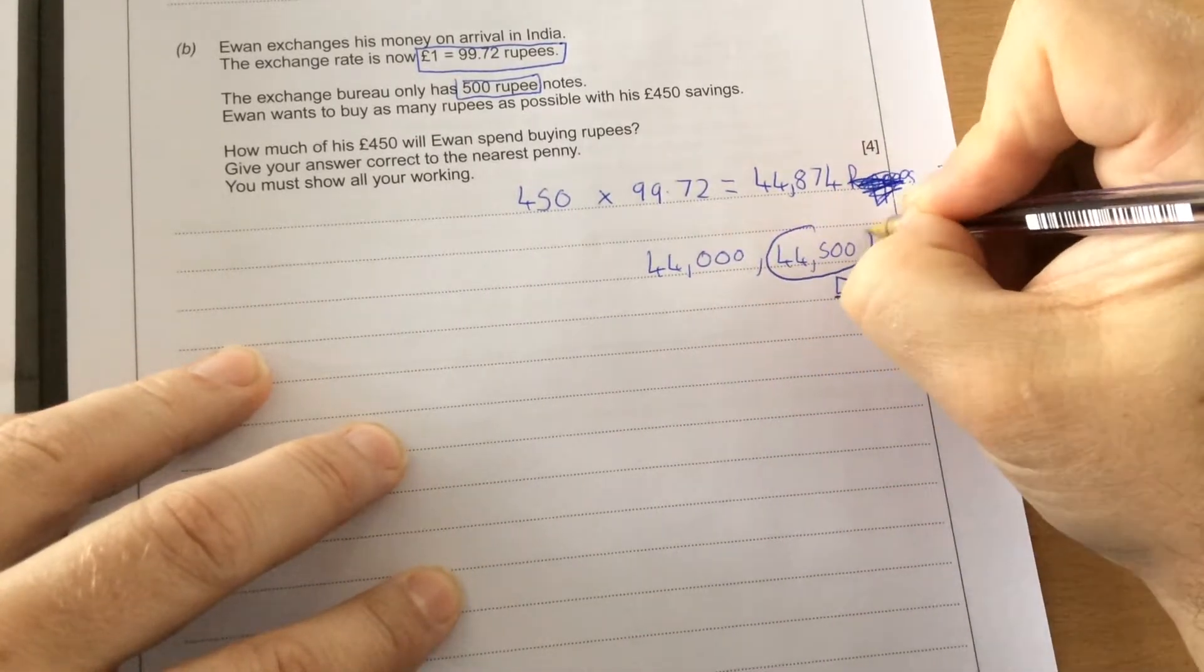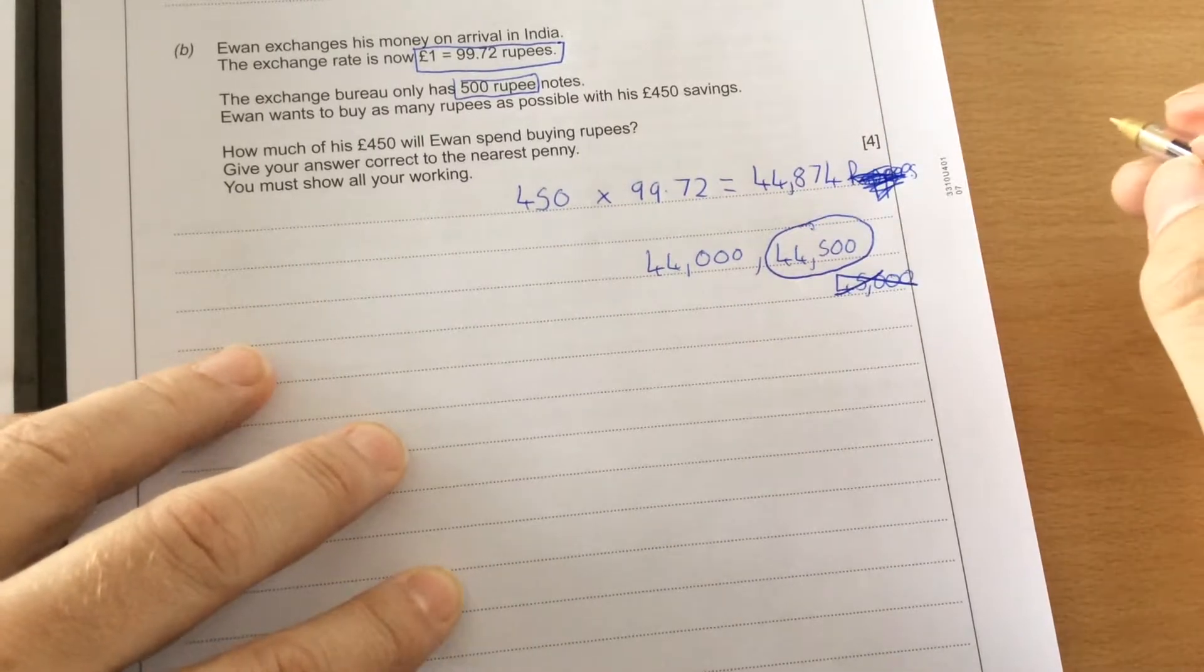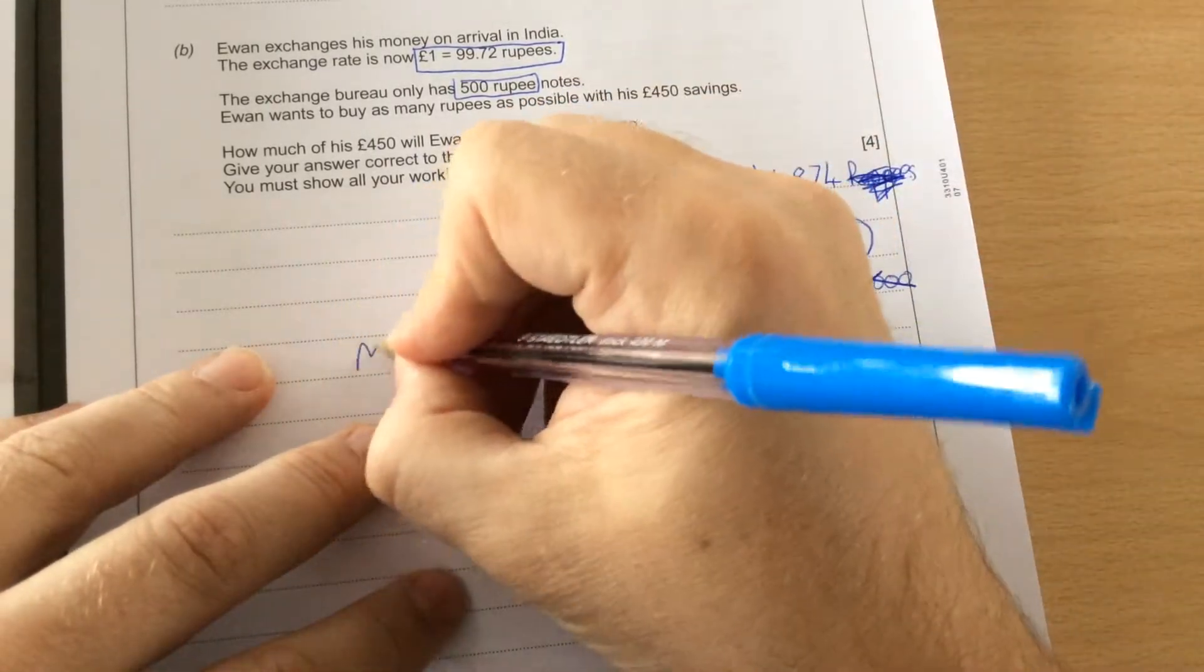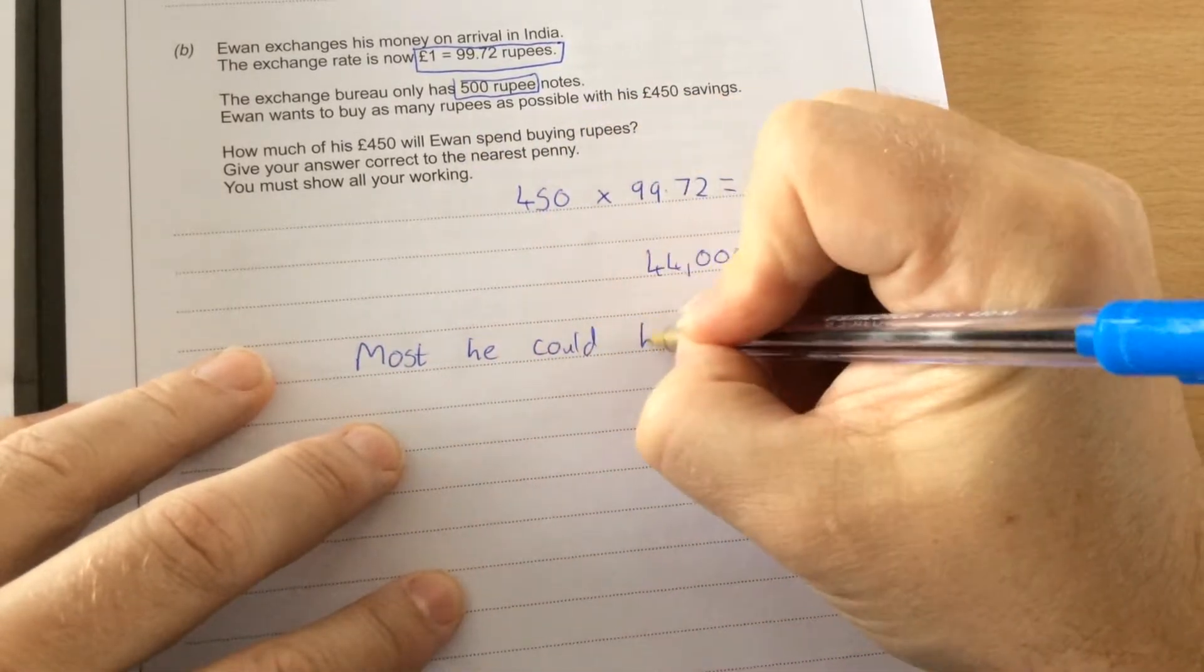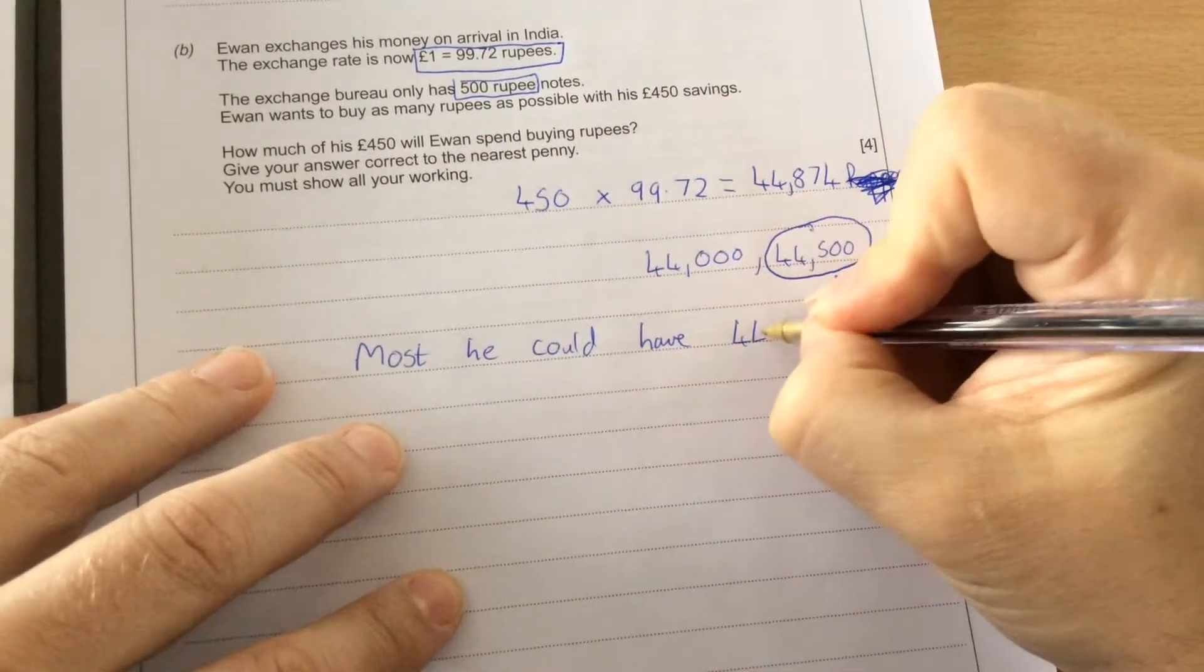So the most he can have is this. So the most he could have is 44,500 rupees.